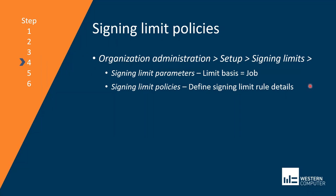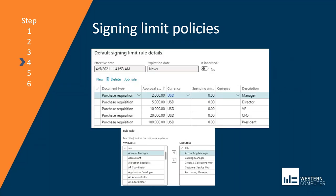Your next step will be to look at the signing limits themselves. There's a signing limit parameter where you will set the limit basis as job. Then you have the signing limit policies themselves, where you will define the policies and associate the job rules. I'm showing two screenshots here. The first one, called default signing limit rule details, shows I have set up a manager, director, VP, CFO, and president with different approval limits.